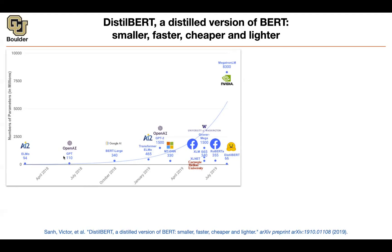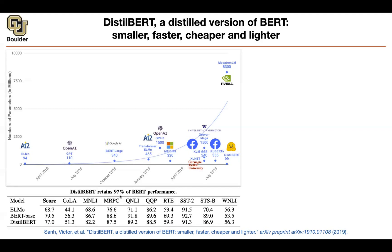We started with ELMo, then covered GPT-1 with 110 million parameters, then BERT-Large which was a little bit larger, then transformer ELMo, then GPT-2 with 1,500 million parameters. Then Microsoft, Facebook, and NVIDIA came up with larger and larger models — a massive engineering effort. We covered RoBERTa, Albert, and we are going to cover XLNet. DistilBERT is here at 66 million parameters, much smaller, and it retains 97% of BERT's performance. Comparing ELMo, BERT-Base, and DistilBERT on downstream tasks, they perform comparably, with BERT and DistilBERT performing better than the others.